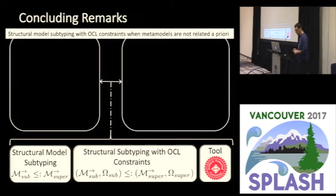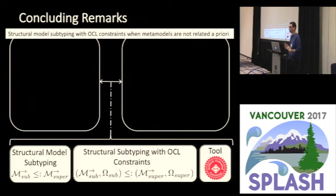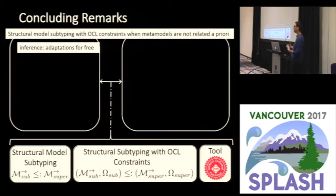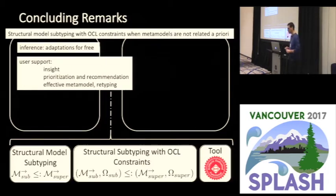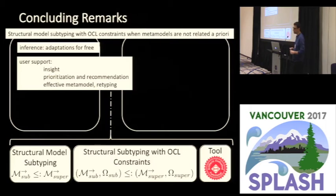In conclusion, I have briefly presented an approach for inferring structural model subtypings between metamodels defined with well-formedness constraints. The advantage is that these metamodel specifications do not need to be related a priori — the tool infers subtypings and those subtypings support some adaptations for free, as class names are not taken into account so it works with all possible renamings. Our tool also provides support for reusing model management operations for the supertype metamodel, and in case a subtyping cannot be inferred, it provides insight into where the errors may be.